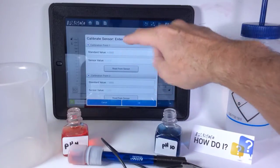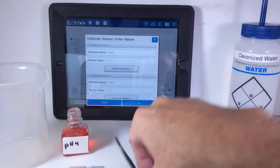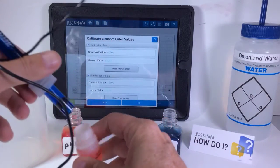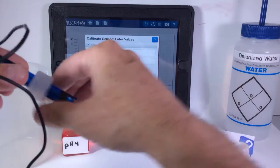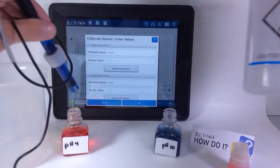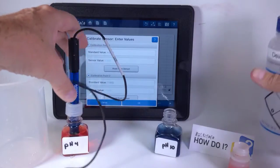And it says standard value 4. Notice that I do have a pH 4 buffer solution. I'm going to remove the pH probe from its stored solution, rinse it off, and place it into the pH 4 solution.